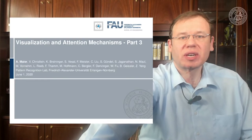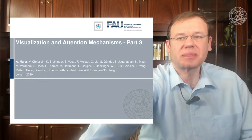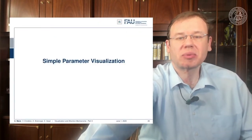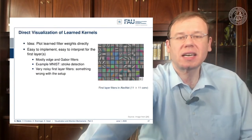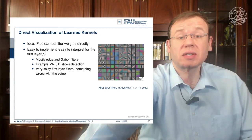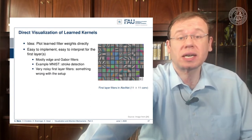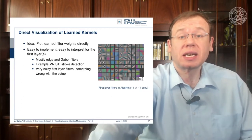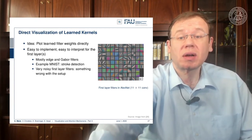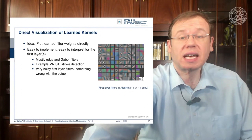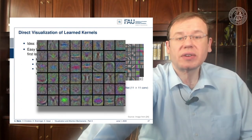Let's try to figure out what's happening inside the networks. We'll start with simple parameter visualization. This is essentially the easiest technique — we've already worked with this in previous videos. The idea is that you can plot the learned filter weights directly. It's easy to implement and also easy to interpret for the first layer.